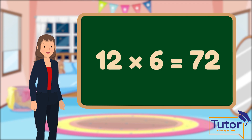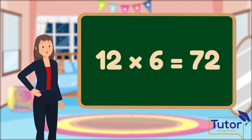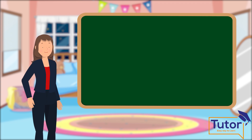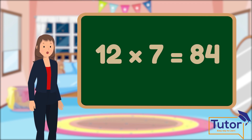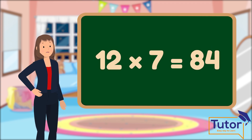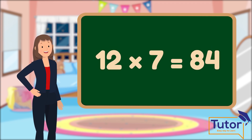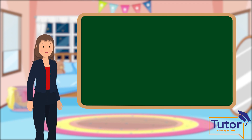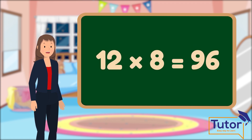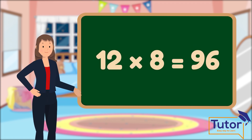12 multiply 6 equals 72. 12 multiply 7 equals 84. 12 multiply 8 equals 96.